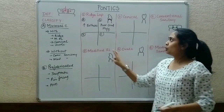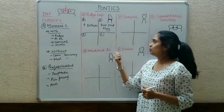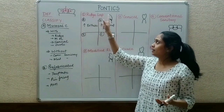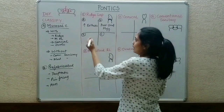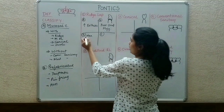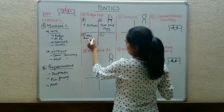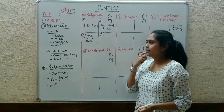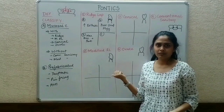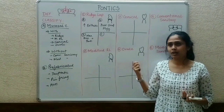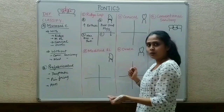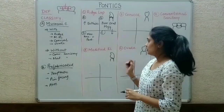Knowing the advantages and disadvantages makes it simple to identify indications and contraindications. Ridge lap pontics are indicated in highly aesthetic regions — mostly the maxillary anteriors and sometimes maxillary posteriors like the premolars. But as we have better options today, we don't use this pontic much anymore. The contraindication is that it leads to poor oral hygiene, so it should not be given in areas that are not easily cleansable or in patients who lack dexterity to clean their mouth.